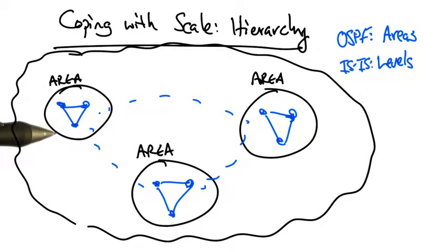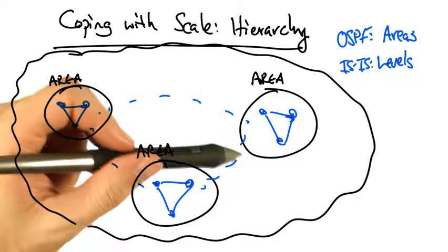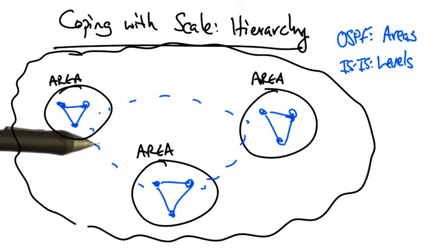In a backbone network, the network's routers may be divided into levels or areas, and the backbone itself may have its own area.